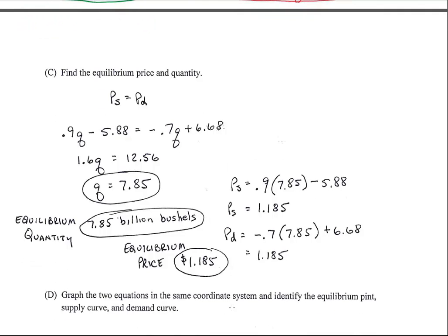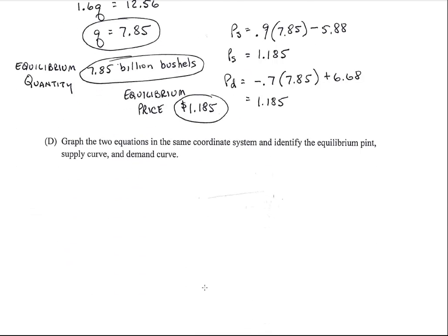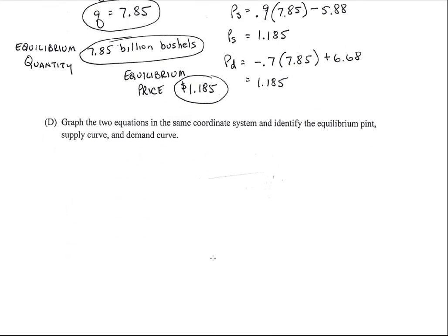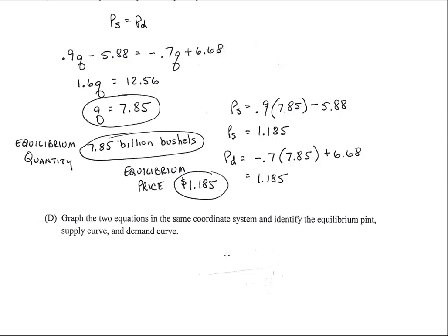They want us to graph the two equations in the same coordinate system. Identify equilibrium—that should be point, not pint—supply curve and demand curve. Well, if you do this via your calculator, you'll be able to see which one's which, and also if you do the intersection method on your calculator, you'll come up with these particular values.